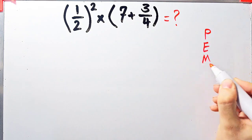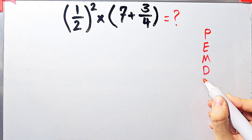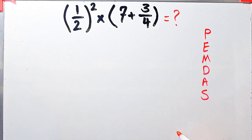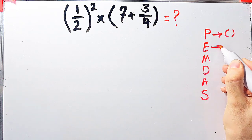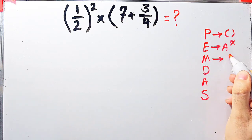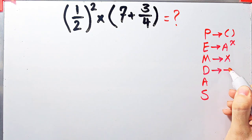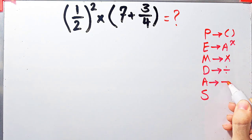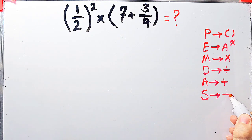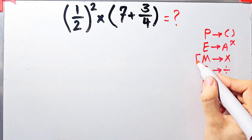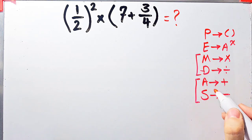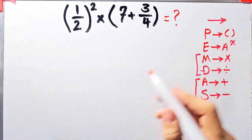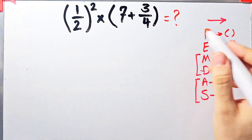PEMDAS shows the priority of mathematical operations, and if you don't pay attention to this rule you get the wrong answer. P stands for parentheses, E stands for exponent, M stands for multiplication, D stands for division, A stands for addition, and S stands for subtraction. Multiplication and division have the same level of priority, and addition and subtraction also have the same level of priority. When we have both in an expression, we start from the left.